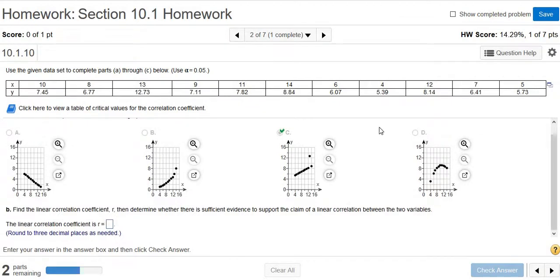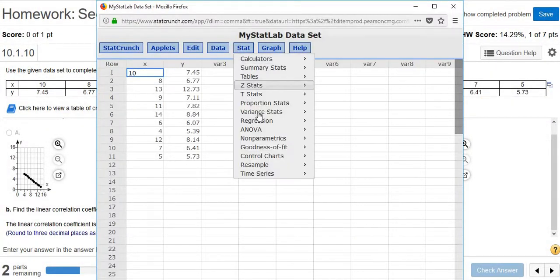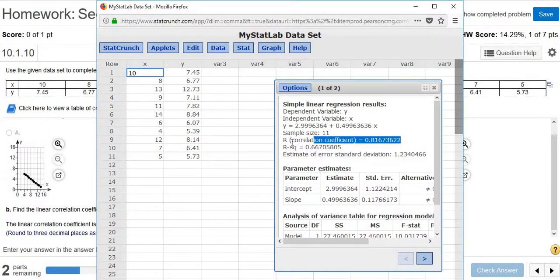Part B, we want the Linear Correlation Coefficient. So again, we just click on this little box, click Open in StatCrunch. Then you go to Stat, Regression, Simple Linear, same place. Just pick the first thing, pick the second thing, click Compute, and there's the correlation coefficient.